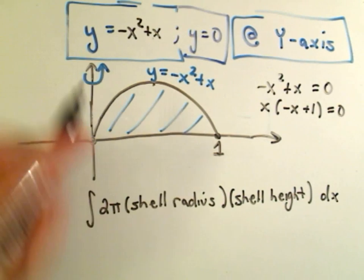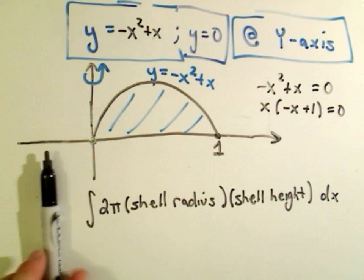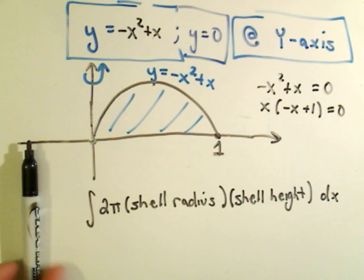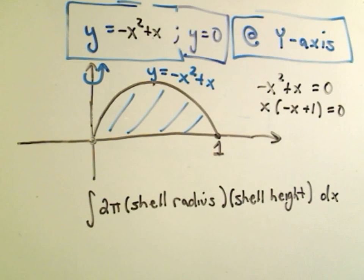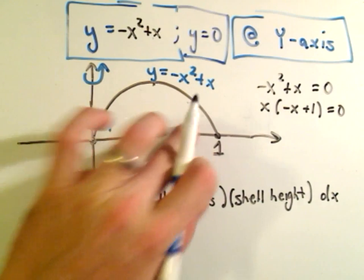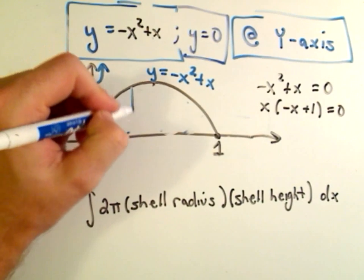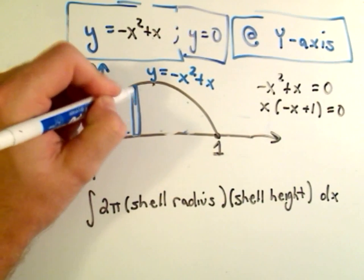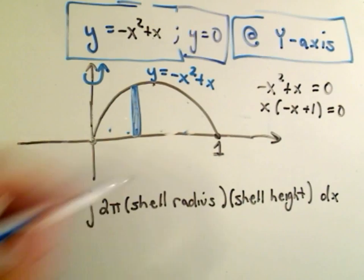If we go about a vertical line, when you do shells, if you go about a line up and down, you're always going to integrate with respect to x. So when I draw a little shell, I just inside of my region, just any old place, I just draw a little shell that's parallel to the line I'm going about.